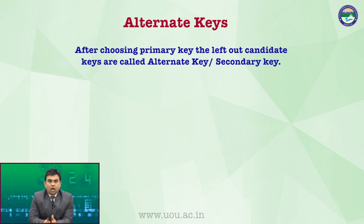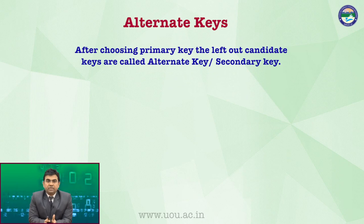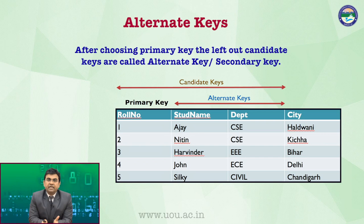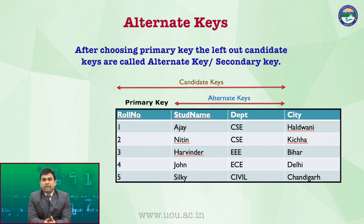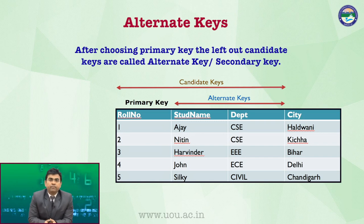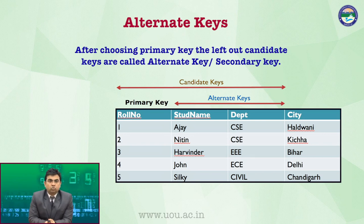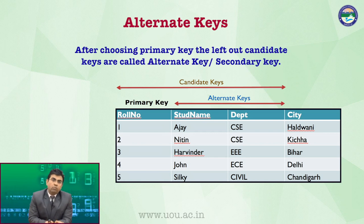After choosing primary key, the left-out candidate keys are called alternate or secondary keys। जो candidate keys हमने choose की थीं, उनमें से एक को मैंने primary key choose कर लिया। तो बाकी जो बची हुई keys थीं वो alternate keys कहलाती हैं — वो भी बन सकती थीं primary key लेकिन हमने choose नहीं किया। यहाँ example में four columns हैं: role number, student name, department, and city। Candidate keys थे role number, student name, और department। हमने role number को primary key choose किया, इसलिए student name और department alternate keys कहलाएंगे।